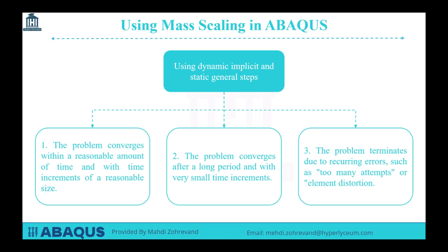The first case is that our problem can be solved with a reasonable time increment, so we can use the dynamic implicit and static general steps. The second case is that our problem can be solved after a very long time, requiring many very short time increments and a high calculation cost. The third case is that our problem will not be solved completely and the job we submitted will abort, with errors such as too many attempts or excessive element distortion.